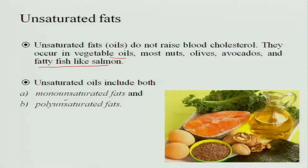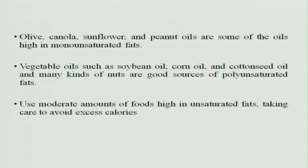Unsaturated fats include both monounsaturated and polyunsaturated fats. Examples of monounsaturated fats include olive oil, canola oil, sunflower oil, and peanut oil. Vegetable oils like soybean oil, corn oil, and cottonseed oil, along with many kinds of nuts, are good sources of polyunsaturated fatty acids.